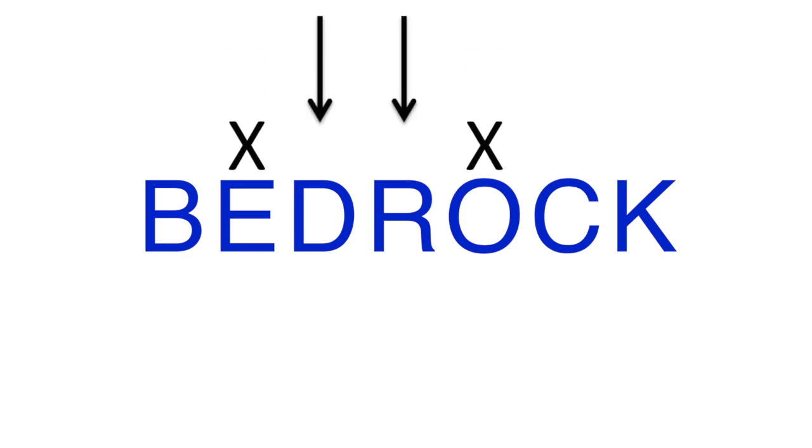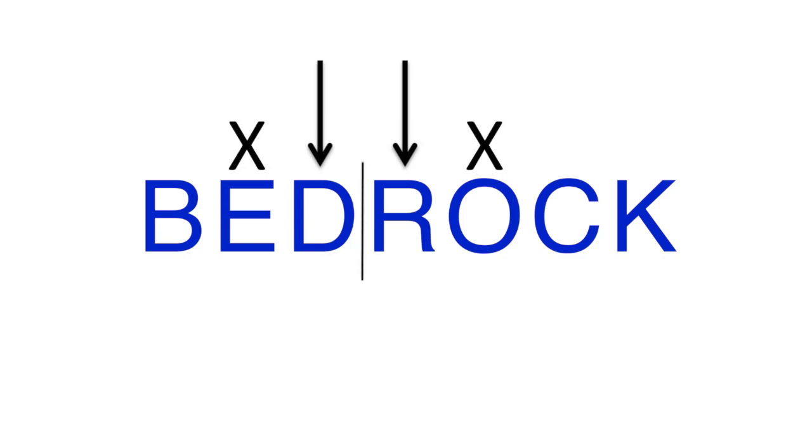Next, a syllable division rule: divide between two consonants. If you have trouble figuring out where to divide the word, mark the vowels with an X — then the two consonants in the middle will stand out better. Draw a line between them. Now that they're divided, it's easy to sound out each syllable and put them together to make a word: b-ed, bed; r-ock, rock; bedrock.